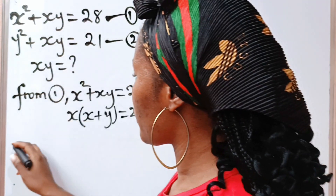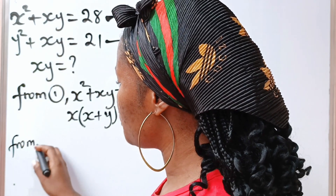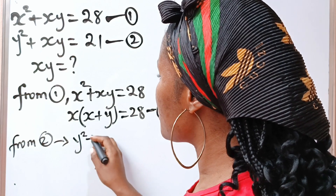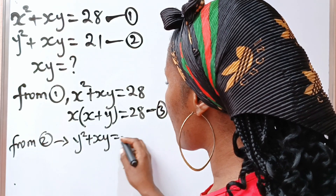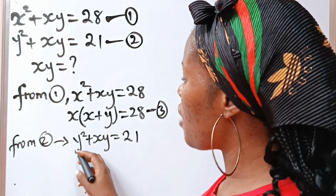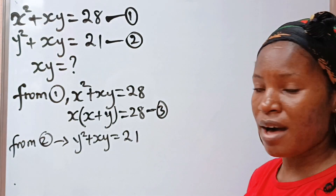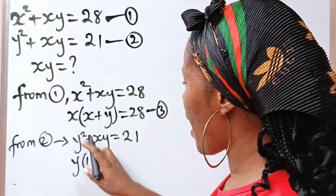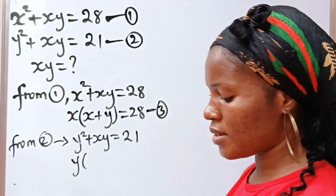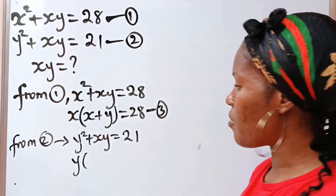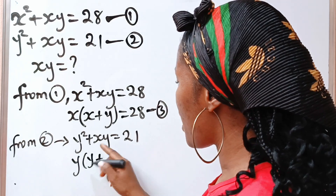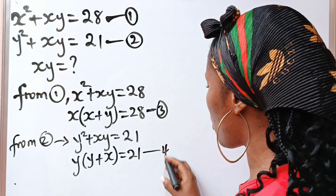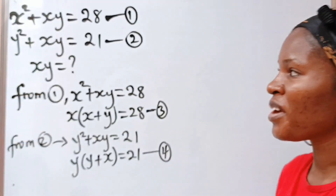From equation 2, we can see that y squared plus xy is equal to 21. Now, if we factorize y — which is what they have in common — we have y bracket: y squared divided by y gives us y, plus xy divided by y gives us x, is equal to 21. Let's call this equation 4.